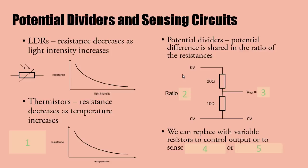LDRs have a graph like this: increase the light intensity and reduce the resistance, but at a decreasing rate. Thermistors - resistance decreases as temperature increases. All you need to remember for these variable resistors affected by the environment is that resistance decreases with their particular stimulus.